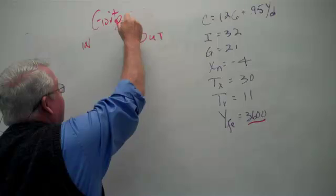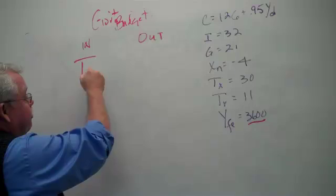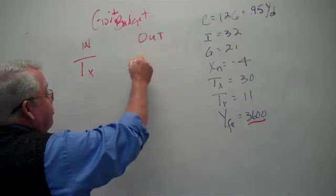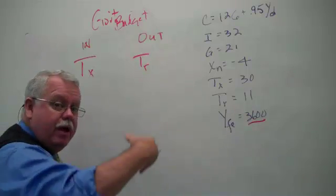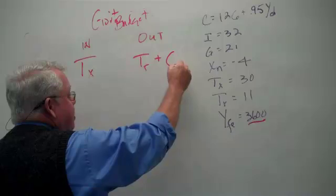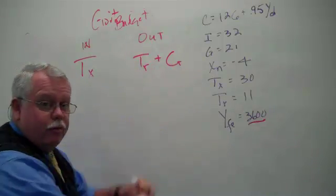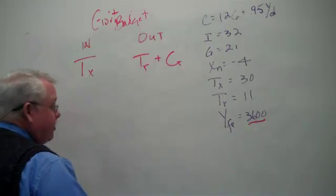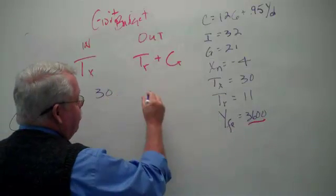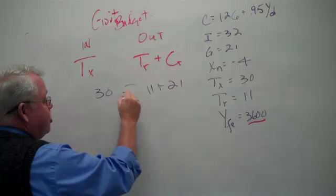their income, the money coming into them is in the form of taxes. And the money that they are disbursing, putting out, is the transfers that they make to the selected entitlement groups, plus their spending. And so, we want to compare these amounts as they're presented in a given model. Here we see that taxes are 30, transfers are 11, government spending is 21.